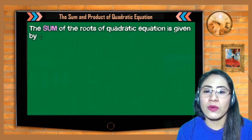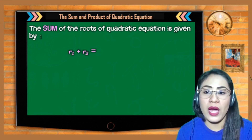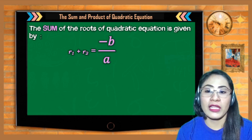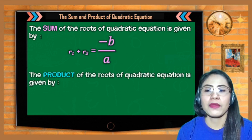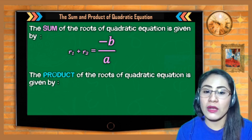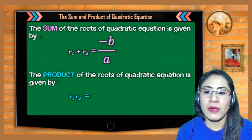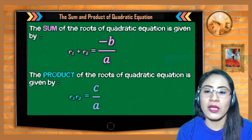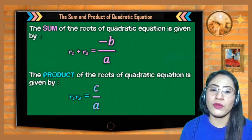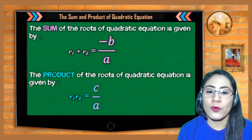The sum of the roots of a quadratic equation — we add the two roots we get — and this is given by r₁ + r₂ = −b/a. The product of the roots of a quadratic equation — we multiply the roots we get — and this is given by r₁ × r₂ = c/a. That is the formula to get the sum and product of the roots.